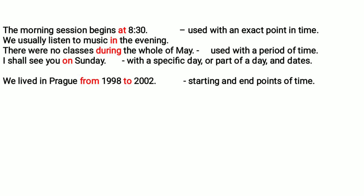Now, for a period of time with a starting point and an end point, consider: 'We lived in Prague from 1998 to 2002.' Students often go wrong with these types of sentences. If we have a starting point and an end point both given, then we use 'from' and 'to.' So: 'We lived in Prague from 1998 to 2002.'